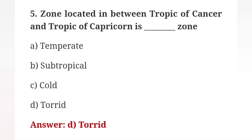Question 5: Ozone located between the Tropic of Cancer and Tropic of Capricorn is in which zone? Answer: Option D — Torrid zone.